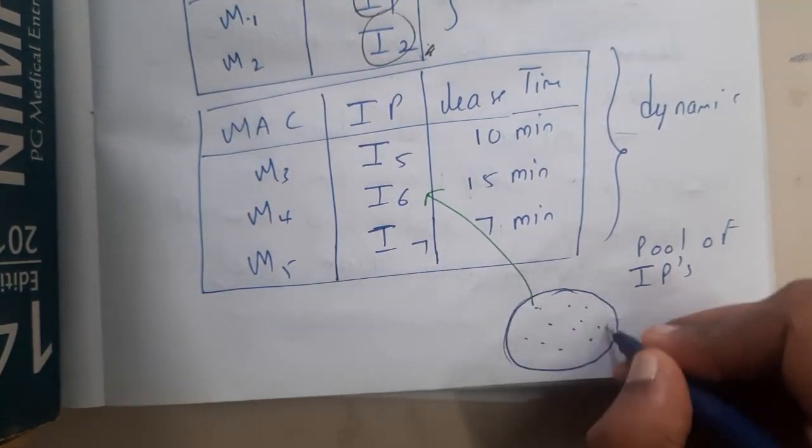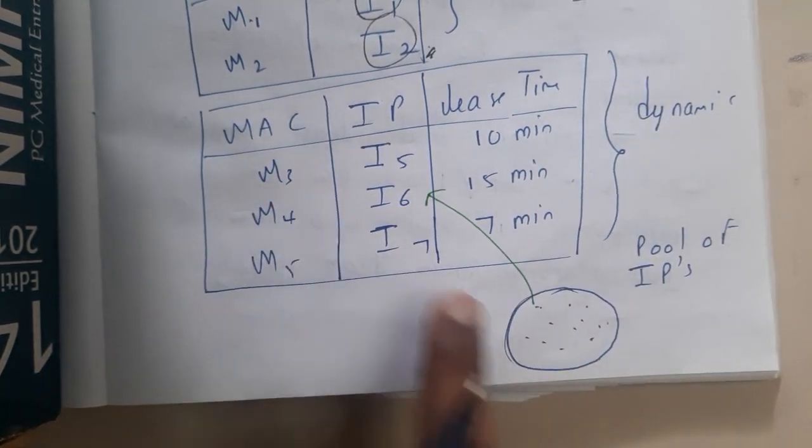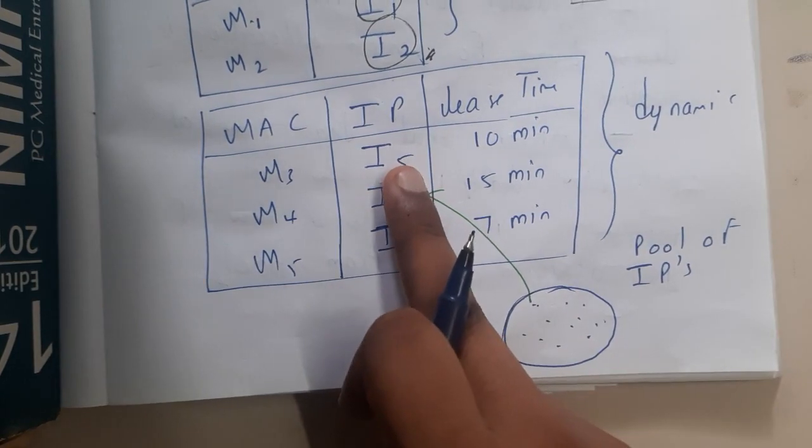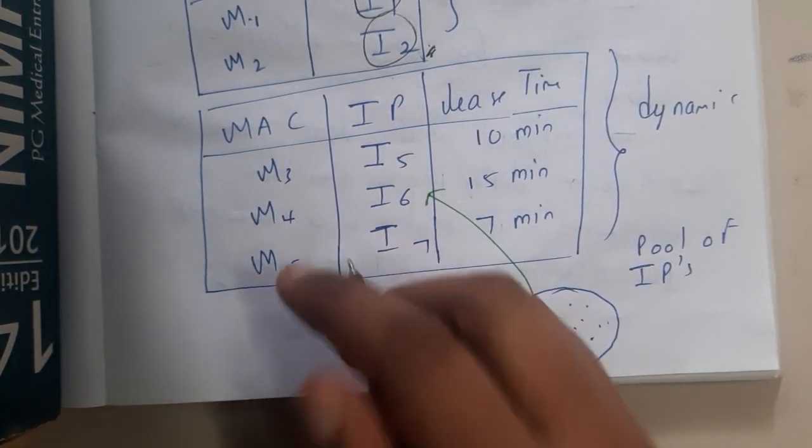Inside this IP pool there are I1 to I100. Whenever M3 machine came, I gave him I5. For M4 I gave I6, for M5 I gave I7. If M7 comes, I will give I77.